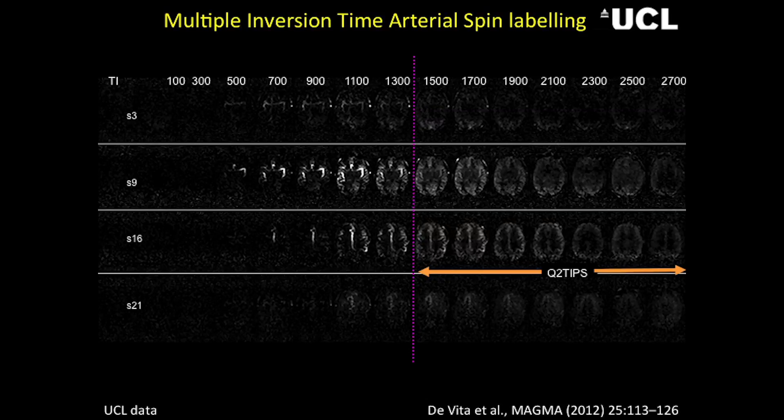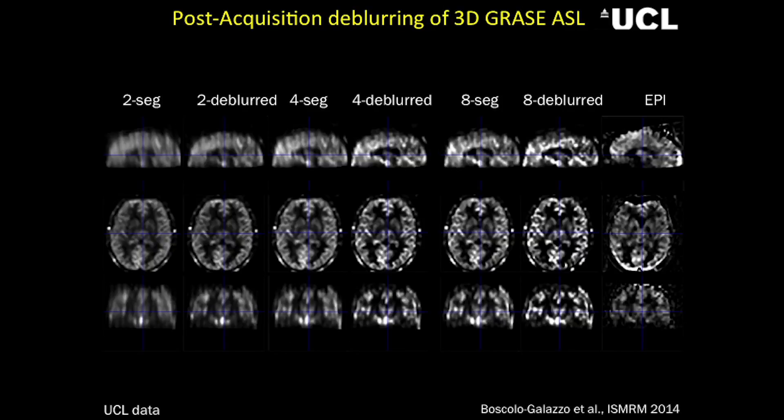But nowadays we have a new sequence called arterial spin labeling, or ASL, that can produce non-invasive quantitative maps of perfusion. The problem is that there's quite a bit of variability between subjects, and I don't feel confident to use this at the moment in clinical practice.